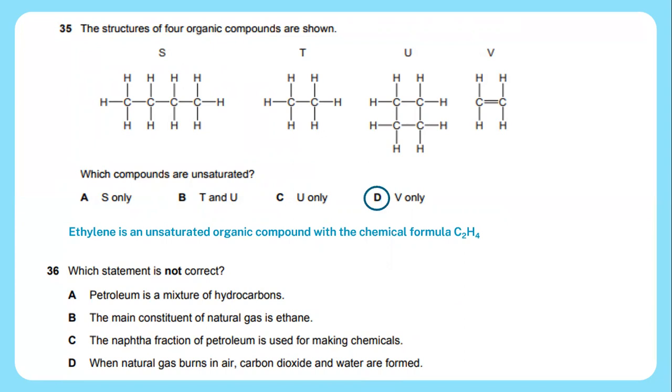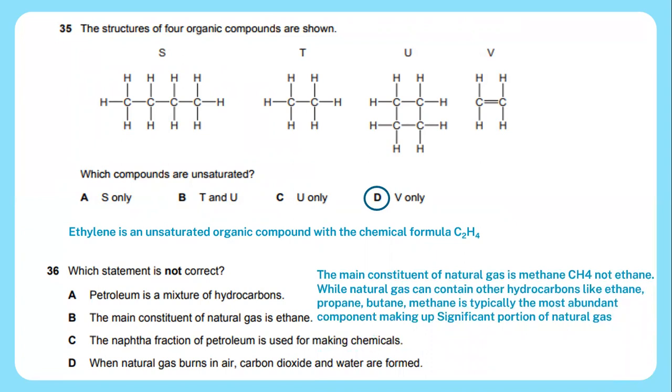Question 36: Which statement is not correct? The main constituent of natural gas is methane CH4, not ethane. While natural gas can contain other hydrocarbons like ethane, propane, butane, methane is typically the most abundant component, making up significant portions of natural gas. So the answer, which statement is not correct, will be the main constituent of natural gas is ethane. This is not correct. As I already explained, the main constituent of natural gas is methane, which is CH4.